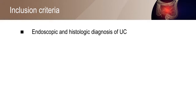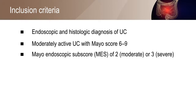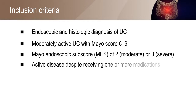Patients who were endoscopically and histologically diagnosed with ulcerative colitis were included in the study. People having moderately active ulcerative colitis with Mayo score 6-9 and Mayo endoscopic subscore of two or three were selected. Individuals having active disease despite receiving one or more medications were also eligible.